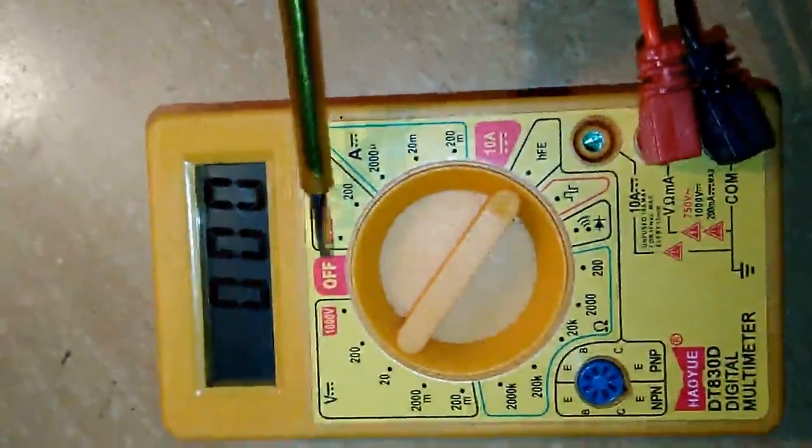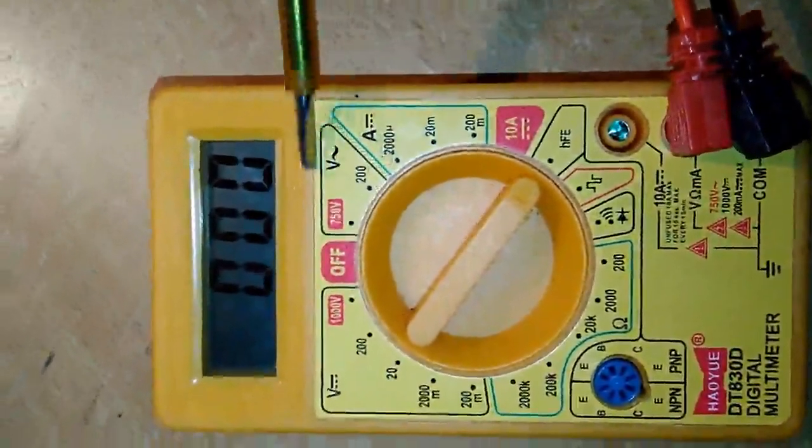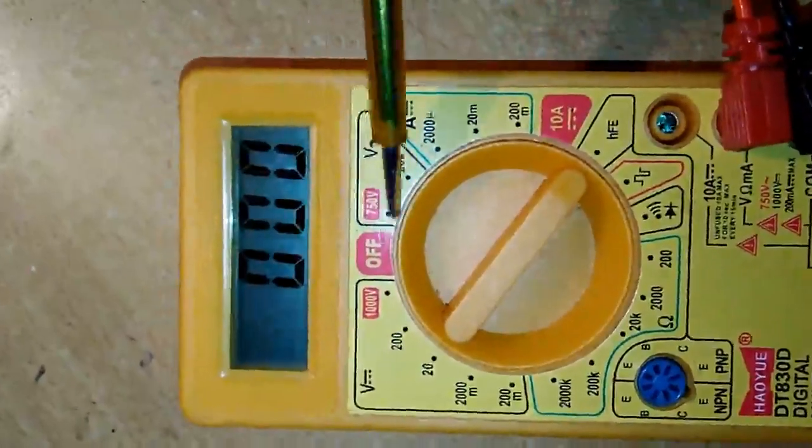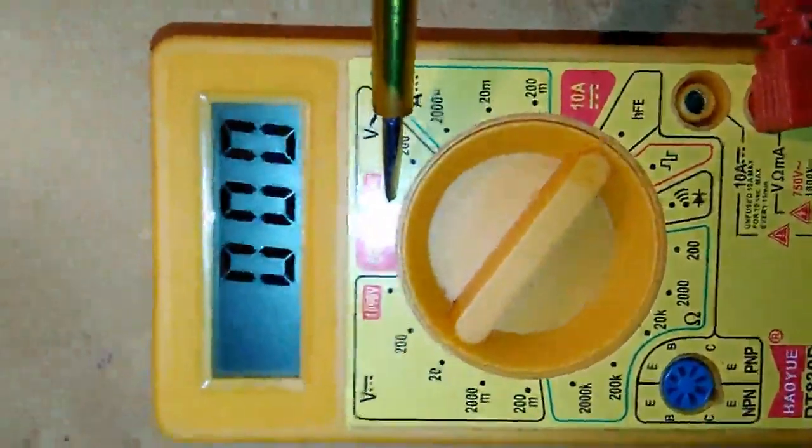Here it measures AC voltage. This is the symbol for AC, and maximum we can measure is 750 volts.